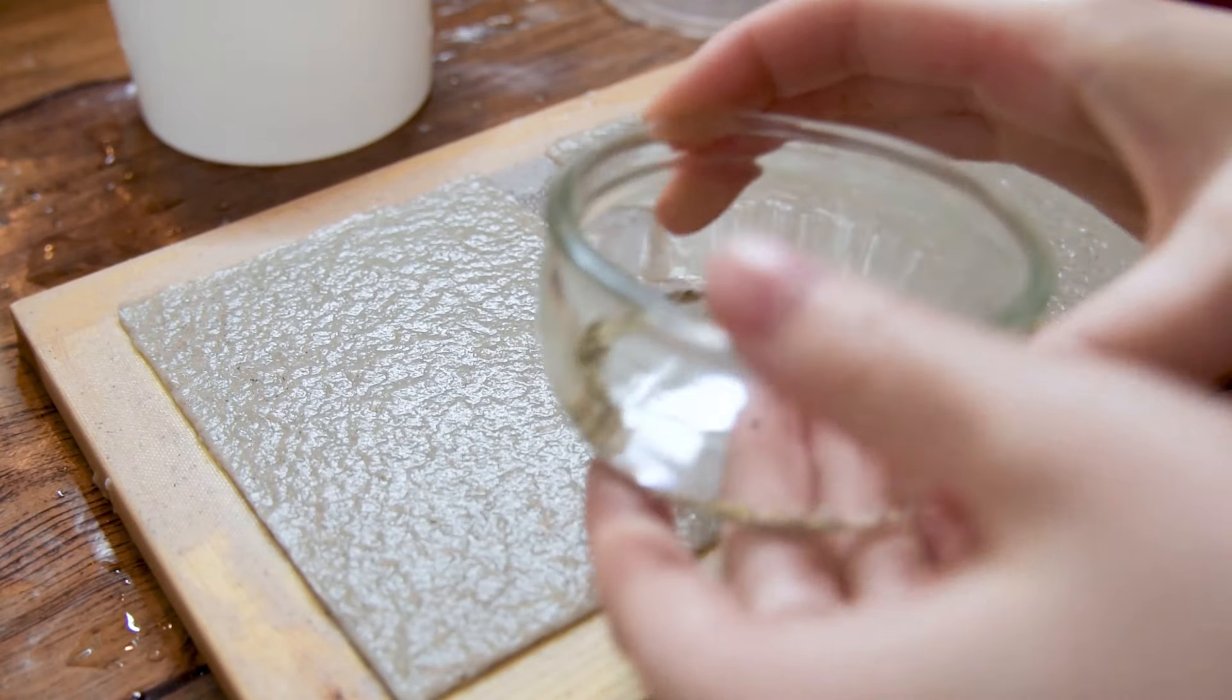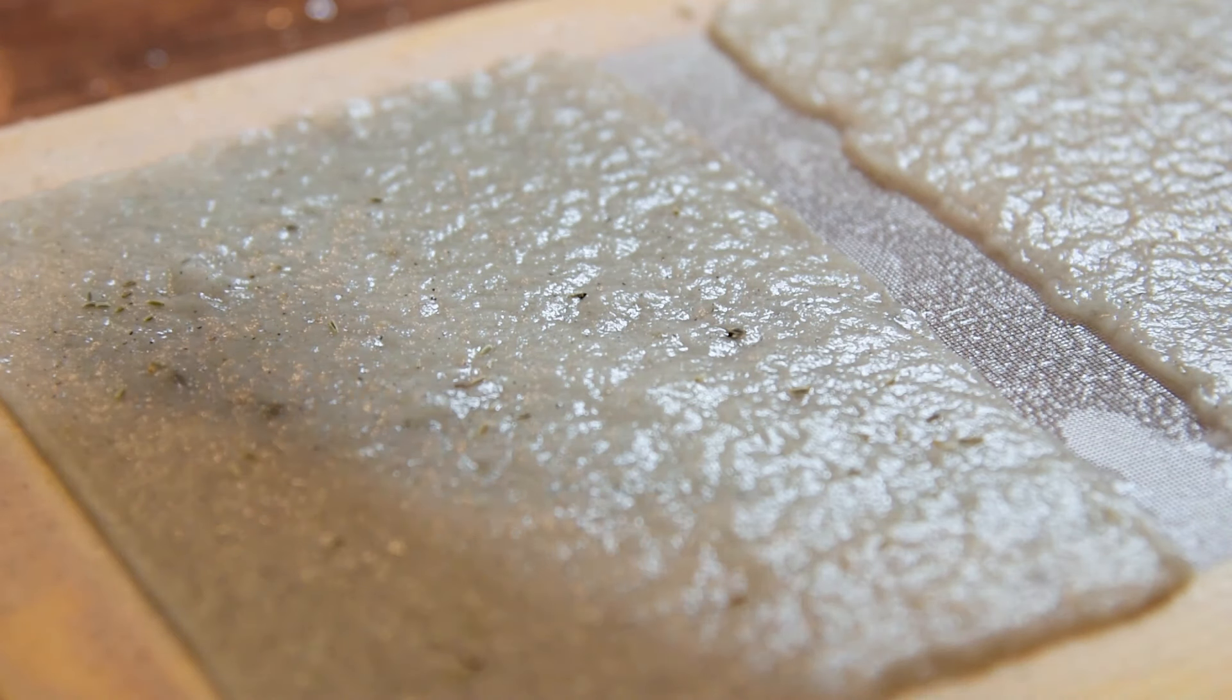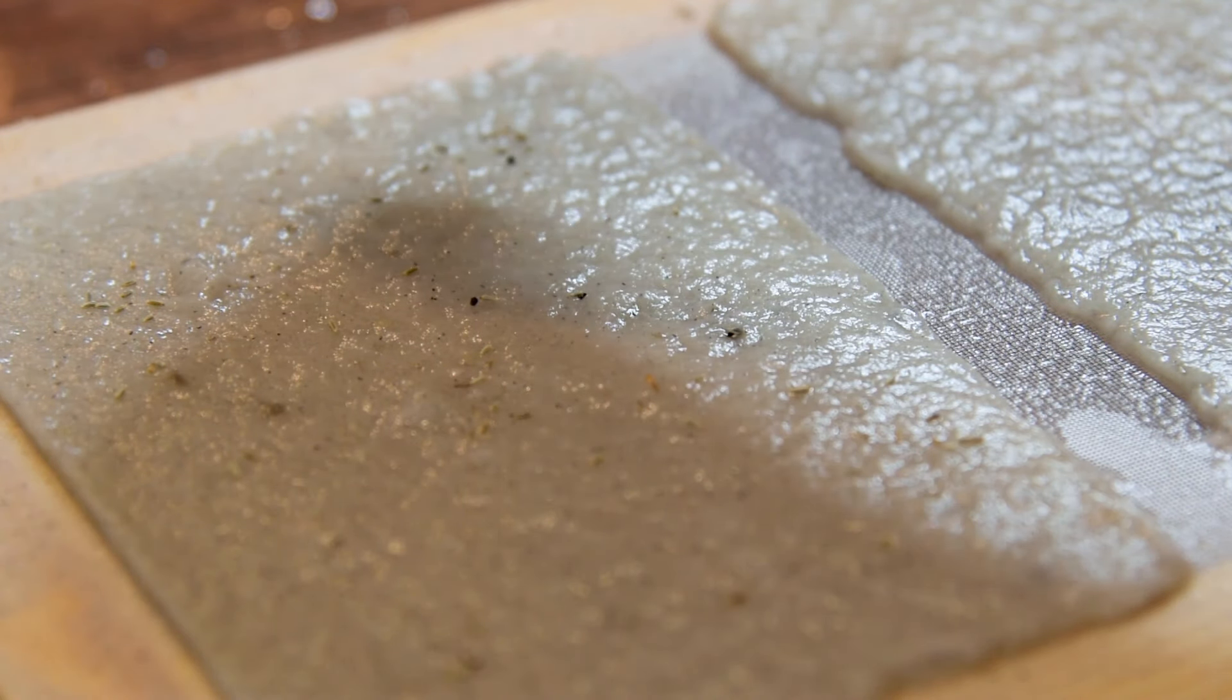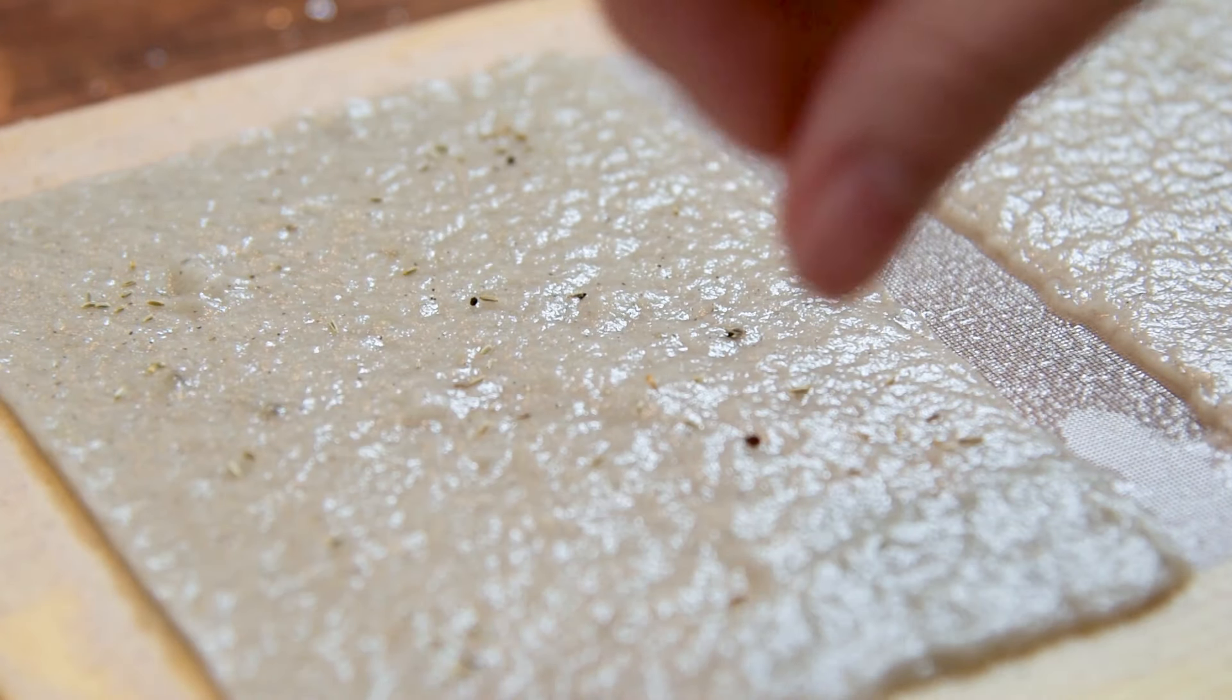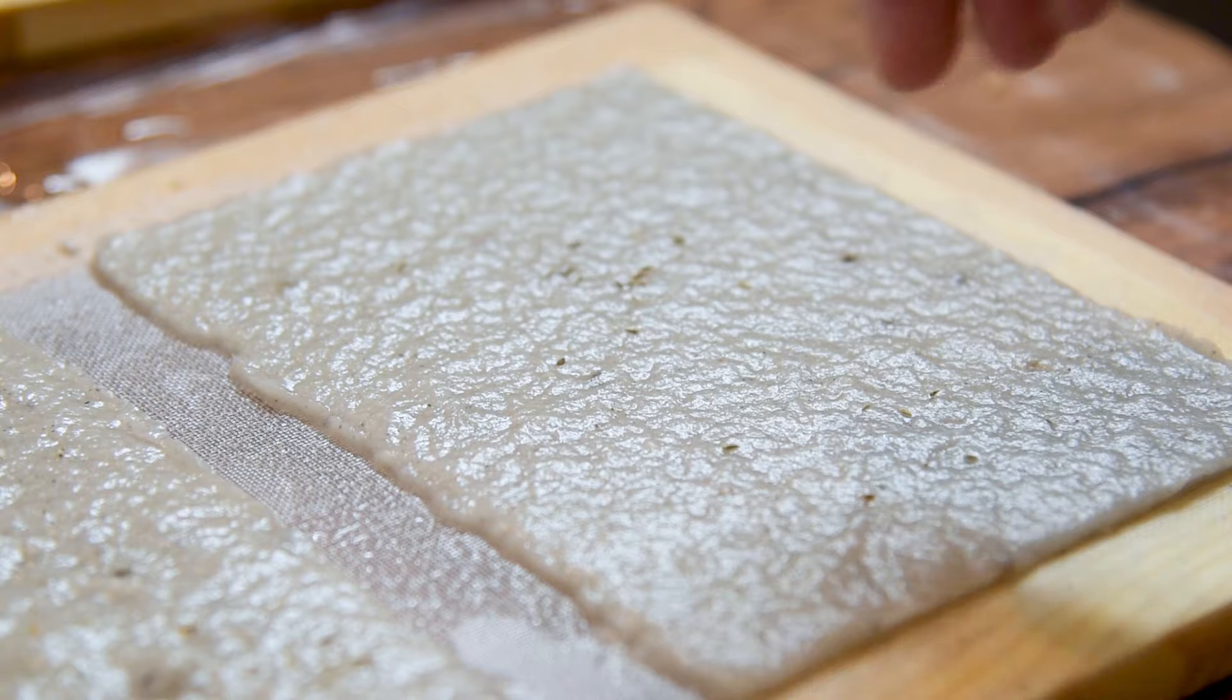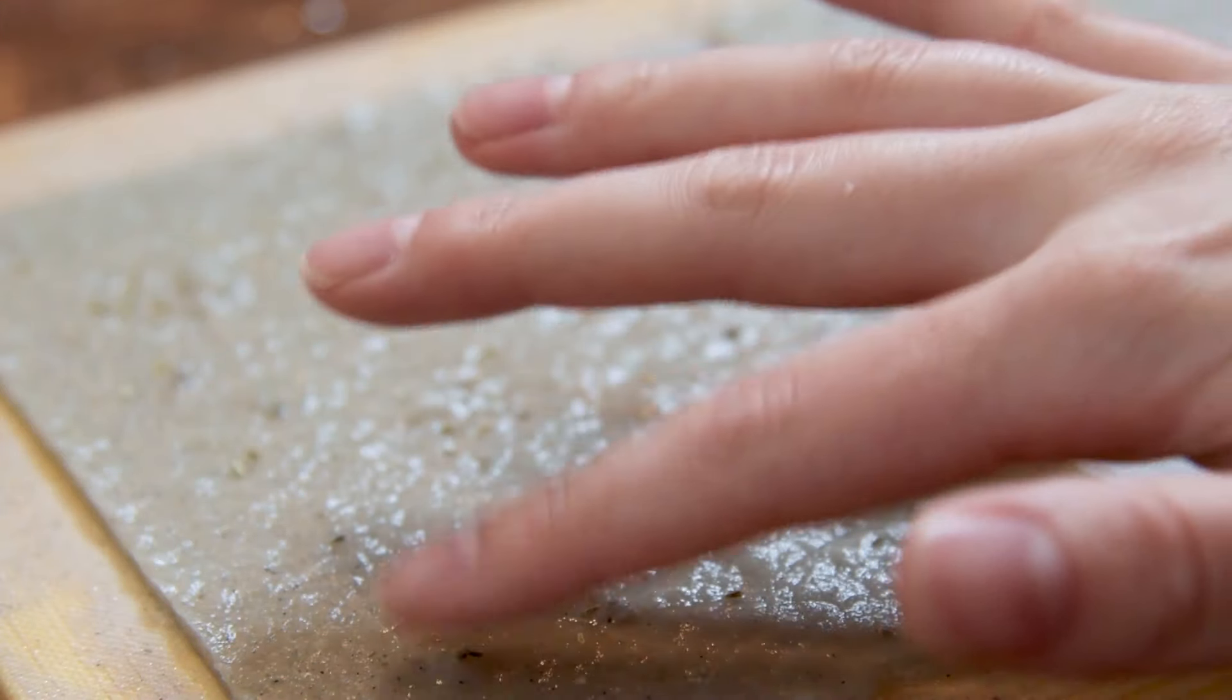Now I get my seeds ready and sprinkle them over the pulp. I try to spread them as evenly as possible, and then press it in to get it underneath the pulp a little bit.